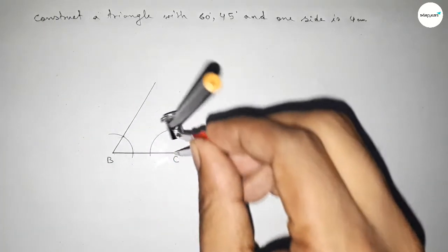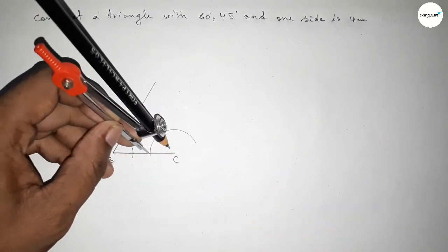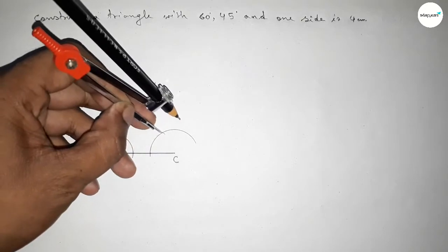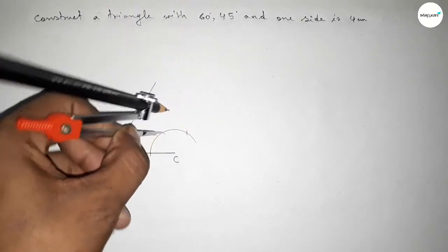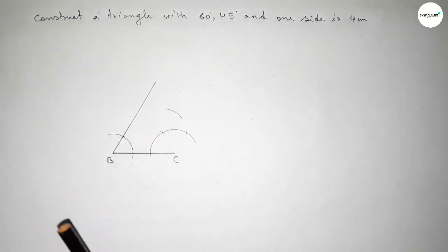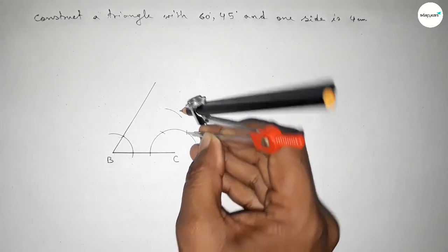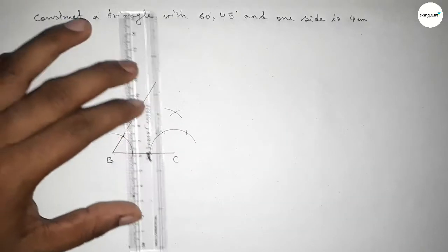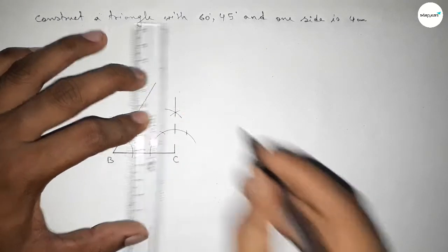Taking any length and drawing an arc at C, then putting the compass with the same length and cutting here. Putting the compass again and cutting here, then drawing an arc with the same length and cutting again so both curves intersect at a point.